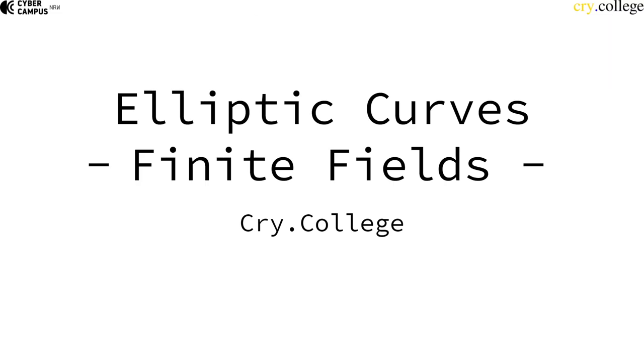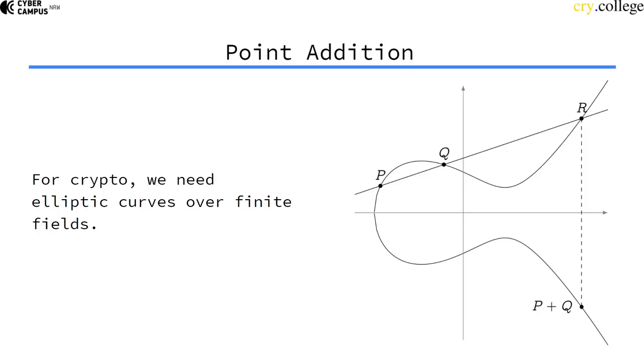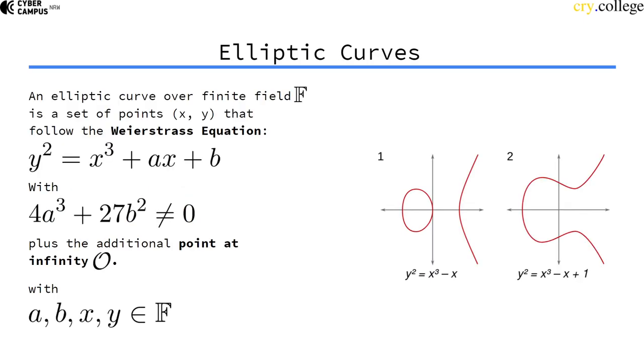Since we can't work well with elliptic curves over the real numbers, we have to use finite fields. So in cryptography we only use elliptic curves over some sort of finite field. So let's look at it.